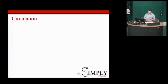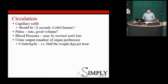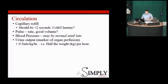Other things that come under circulation: JVP, auscultate the heart. Is there a murmur? If a murmur suddenly appears in a patient who's been on the ward and hadn't had one before, that might hint something's gone on in the heart. Urine output — the kidneys need circulation to perfuse. You're aiming for 0.5ml/kg/hour, so in a 100kg person you'd expect 50ml per hour.